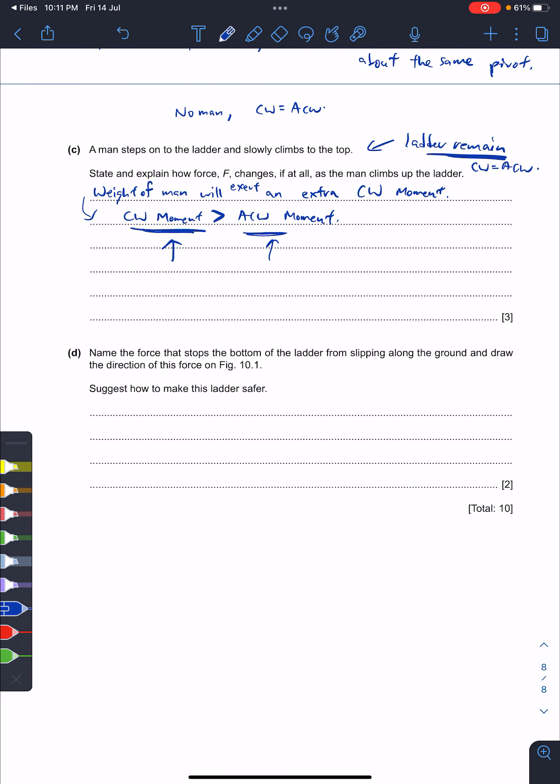So meaning the weight of the man will exert an extra clockwise moment. In order to maintain the clockwise moment equal to anti-clockwise moment, or basically equilibrium, your force, your F, will change. So your F will increase. Yep, so this is the answer.